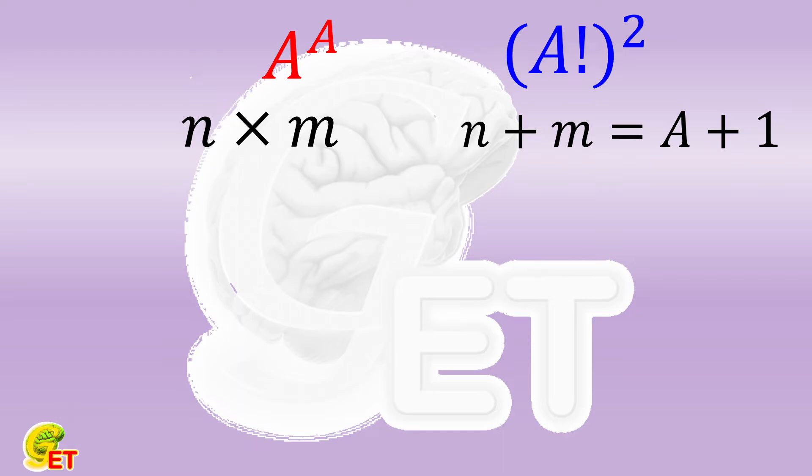It is not difficult to understand that there are only two cases where A to the A power and the square of factorial of A are equal to each other. The first case is that A is equal to 1.